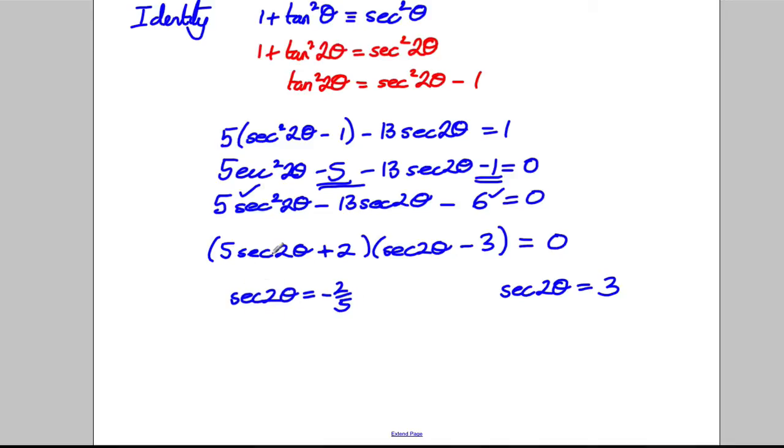So, that's 1 over cosine of 2 theta, so cosine of 2 theta would be the flip of this, the reciprocal, which is negative 5 over 2, or negative 2.5. And this here, cosine of 2 theta, would be 1 over this, which is a third.